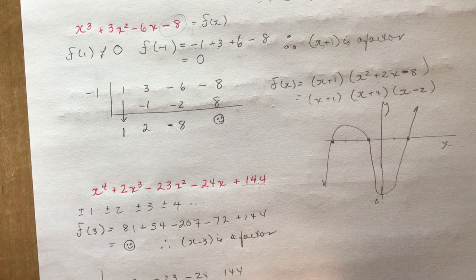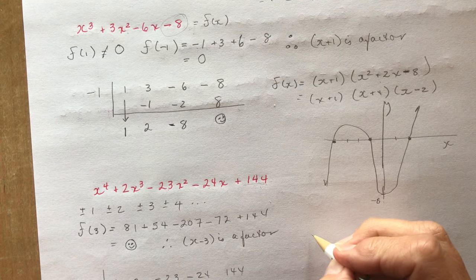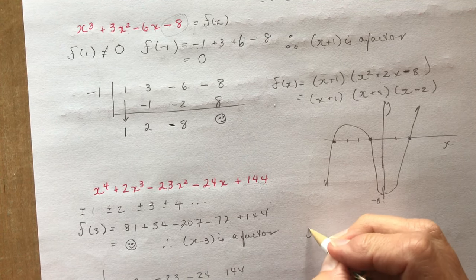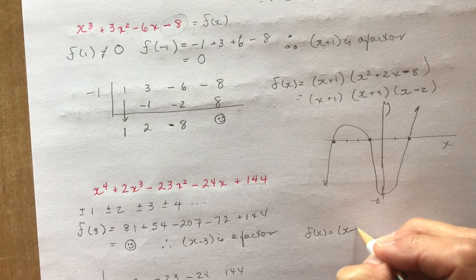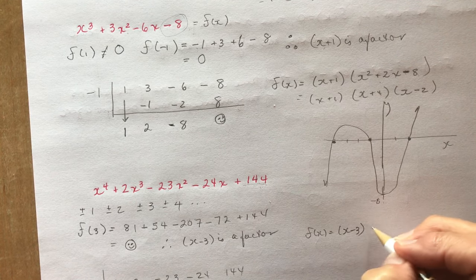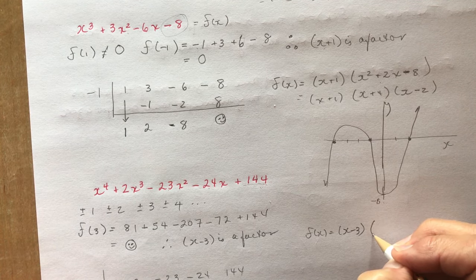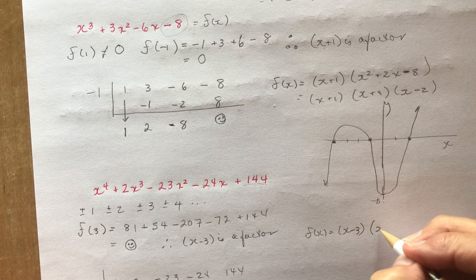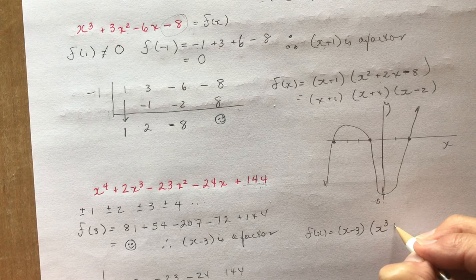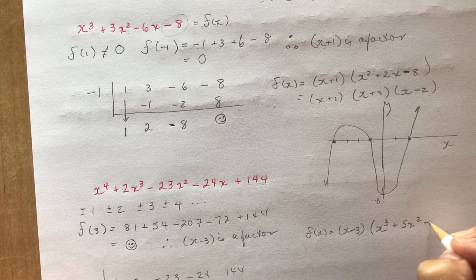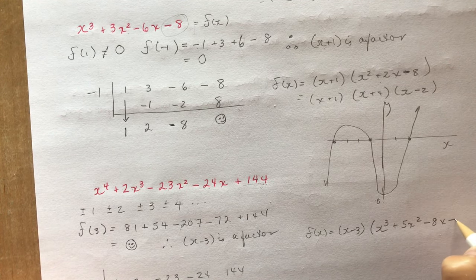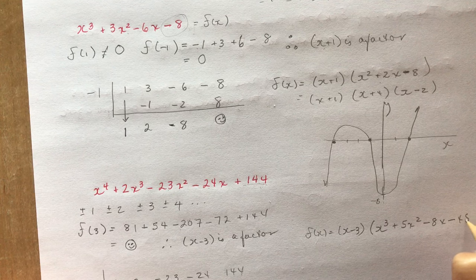Remember this has to be 0 or you've made a mistake. So now I have f(x) equal to x minus 3 times — remember we reduce by one exponent — so that's x cubed plus 5x squared minus 8x minus 48, with no remainder.